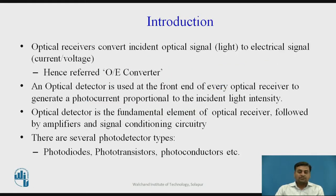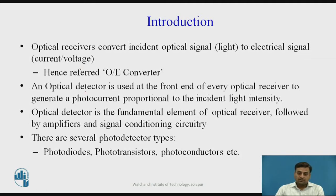Optical receivers convert the incident optical light, which is in the form of pulses, into an electrical signal. Depending upon the circuitry involved, it will be converted into current or voltage, which is why optical receivers are sometimes referred to as optical-to-electrical converters. Optical detectors are used at the front end of every optical receiver to generate a photocurrent proportional to the intensity of the light incident on the receiver. The optical detector is a fundamental element of the optical receiver, which is followed by an amplifier and signal conditioning circuitry.